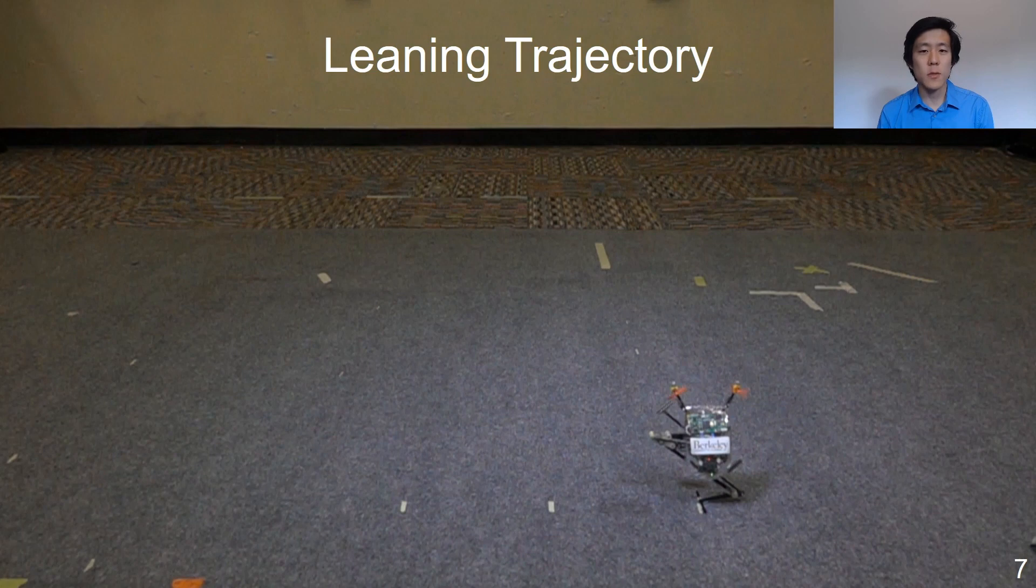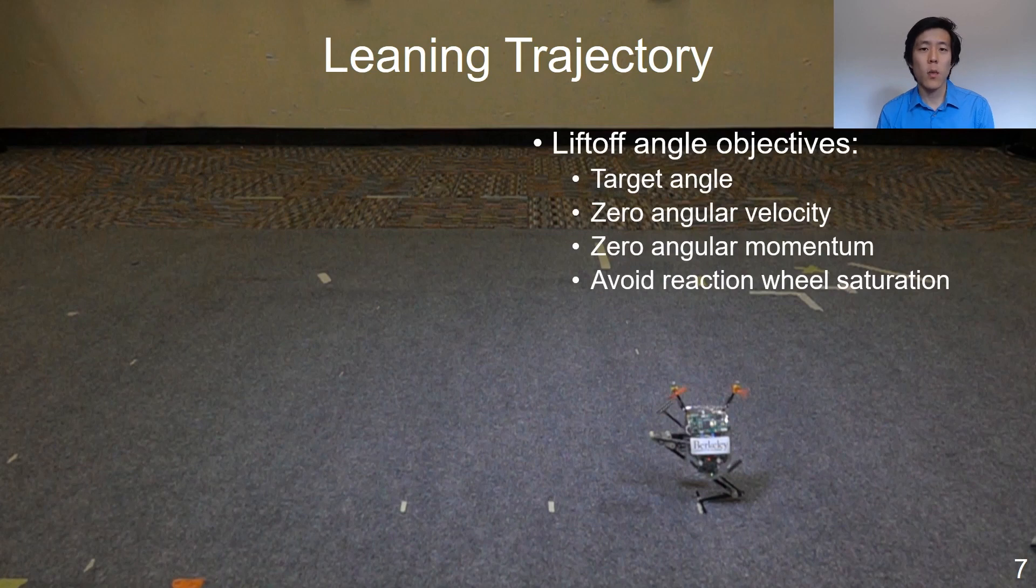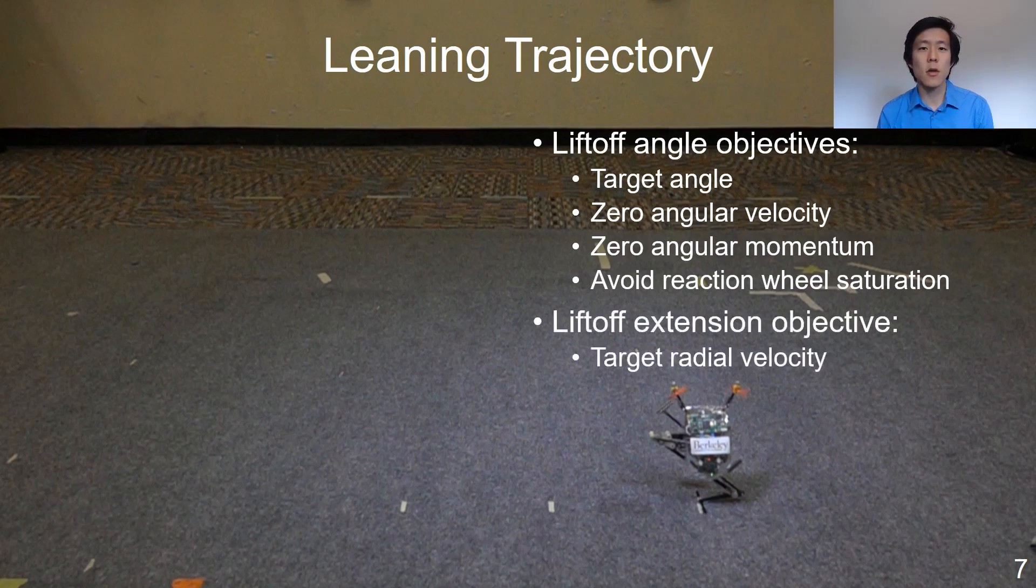In order to get the robot to jump to a specific point, we need it to reach appropriate lift-off conditions at the end of stance, and we have several objectives for our trajectory at this lift-off point. First we'd like it to reach a target angle. We'd also like it to reach zero angular velocity on lift-off to improve accuracy. We also want the robot to have zero angular momentum on lift-off so that the reaction wheel is spinning slowly. This maximizes the control authority it has in the air and on touchdown and landing. And during the stance phase for launch, we'd also like the reaction wheel to avoid saturation to maximize our control authority on the ground before we take off.